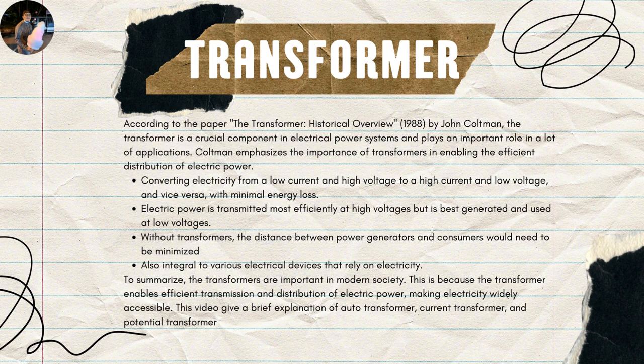Cotman emphasized the importance of transformers in enabling the efficient distribution of electric power. The transformer itself converts electricity from a low current and high voltage to a high current and low voltage, and vice versa, with minimum energy losses. Electric power is transmitted most efficiently at high voltage, but it is best generated and used at low voltage.